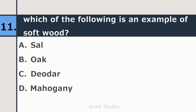Eleventh question: which of the following is an example of softwood — Sal, Oak, Deodar, or Mahogany? The correct answer is Deodar.